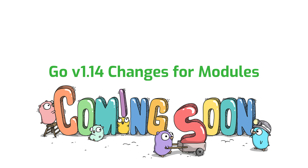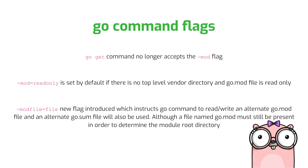JFrog is working on changes to Go Center to support Go 1.14. Here are some of the changes to Go in that release that affect the operation of modules. For go command flags, the go get command will no longer accept the -mod flag. The -mod=readonly flag is set by default if there is no top-level vendor directory and the go.mod file is read only. And -modfile is a new flag introduced which instructs the go command to read and write an alternate go.mod file, and an alternate go.sum file will also be used, although the file named go.mod must still be present in order to determine the module root directory.